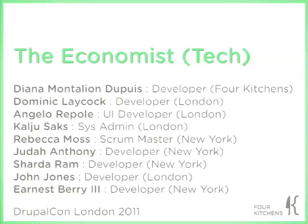Today we're going to have a relatively informal discussion about how The Economist site, which runs on Drupal, works. We're going to talk about how the teams work together, how the Scrum process happens, DevOps, performance, and infrastructure. We'll go through the general architecture, with different members of the team talking about different pieces, and then take questions at the end.